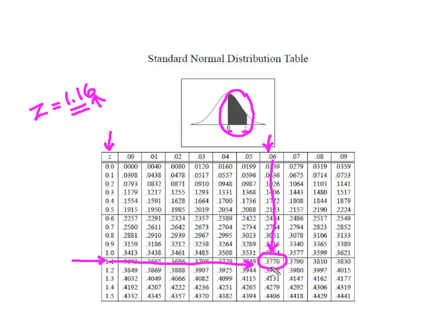And so now what that tells me is 0.3770 or 37.70% of the data in this distribution falls between the mean and my z-score of 1.16.